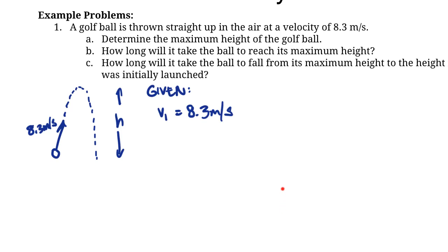If the ball is thrown straight up in the air and it comes back down, what do you notice about it at the top of its path? It sort of stops for a second and then turns around and comes back. So we can say at the maximum height, the final velocity VF is equal to zero, because that's what the velocity is going to be at that top point.